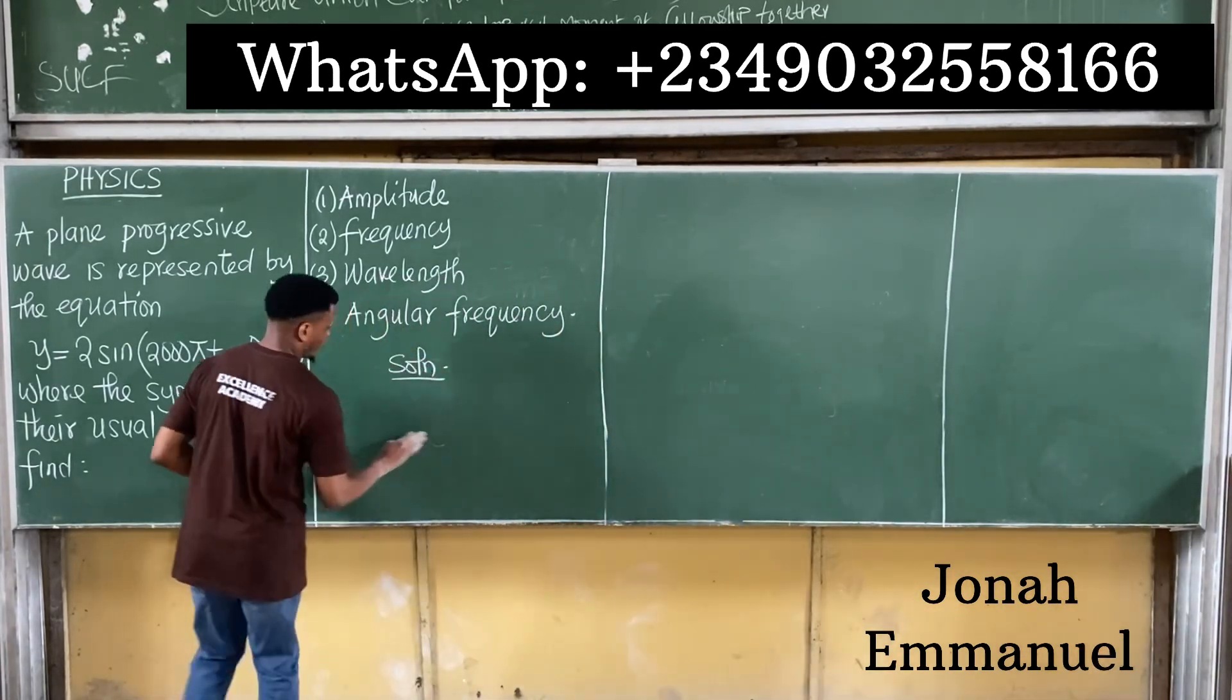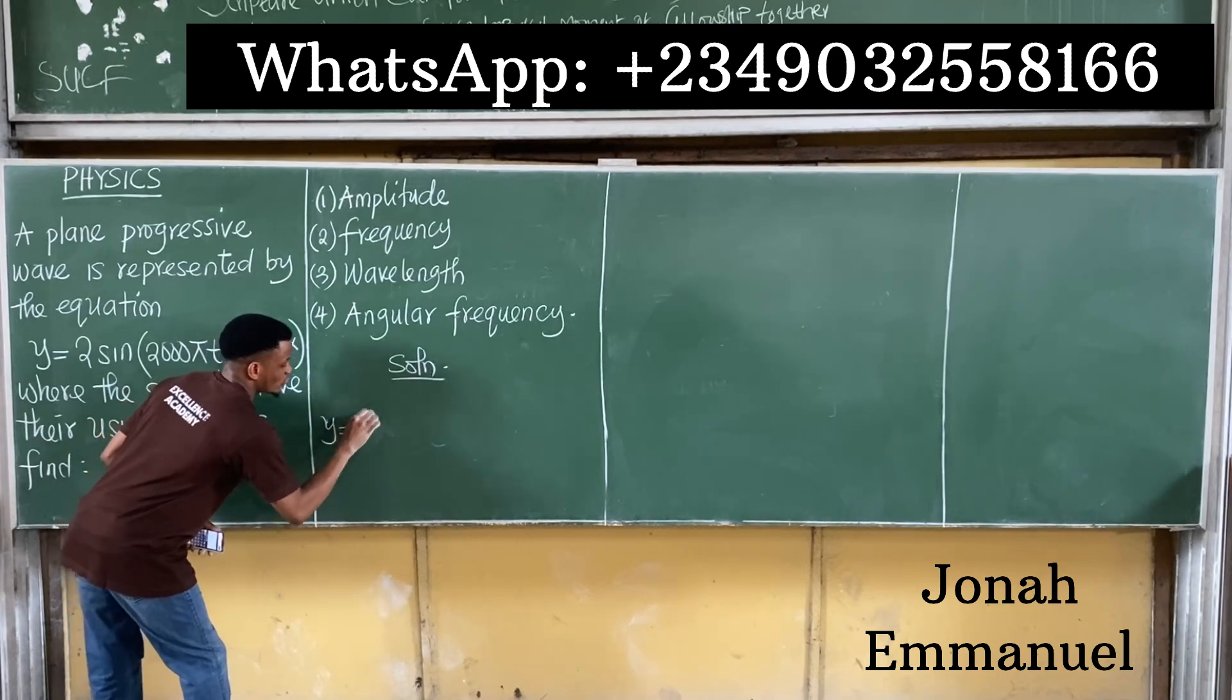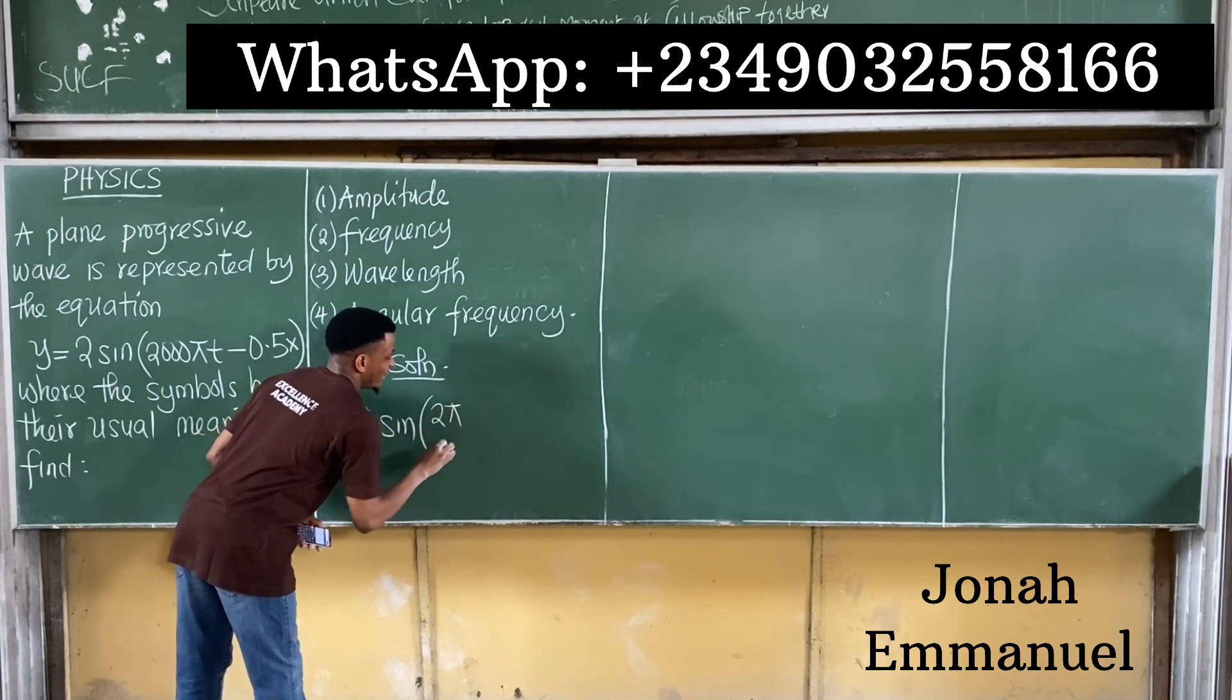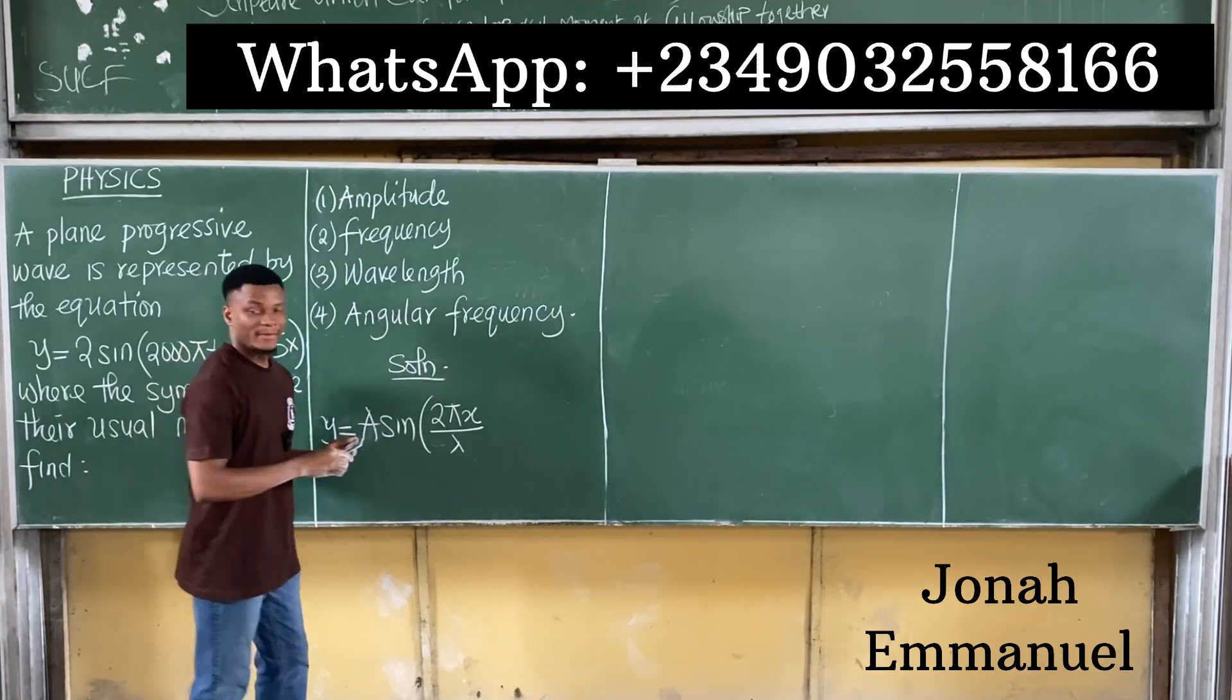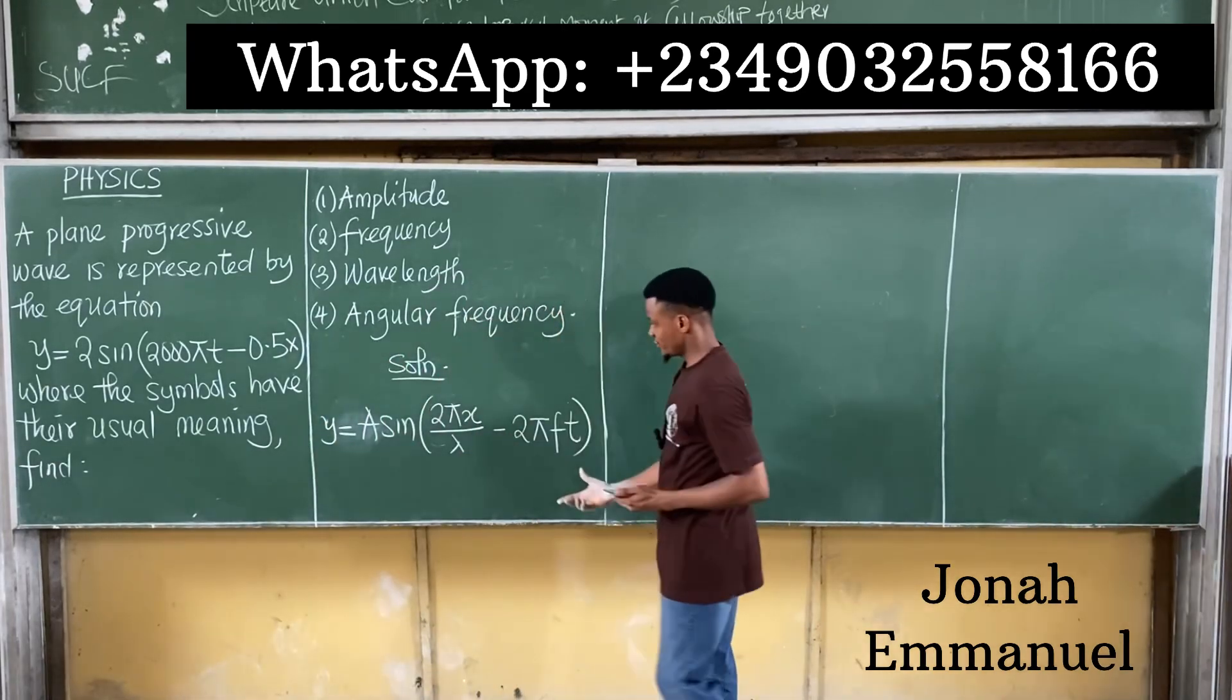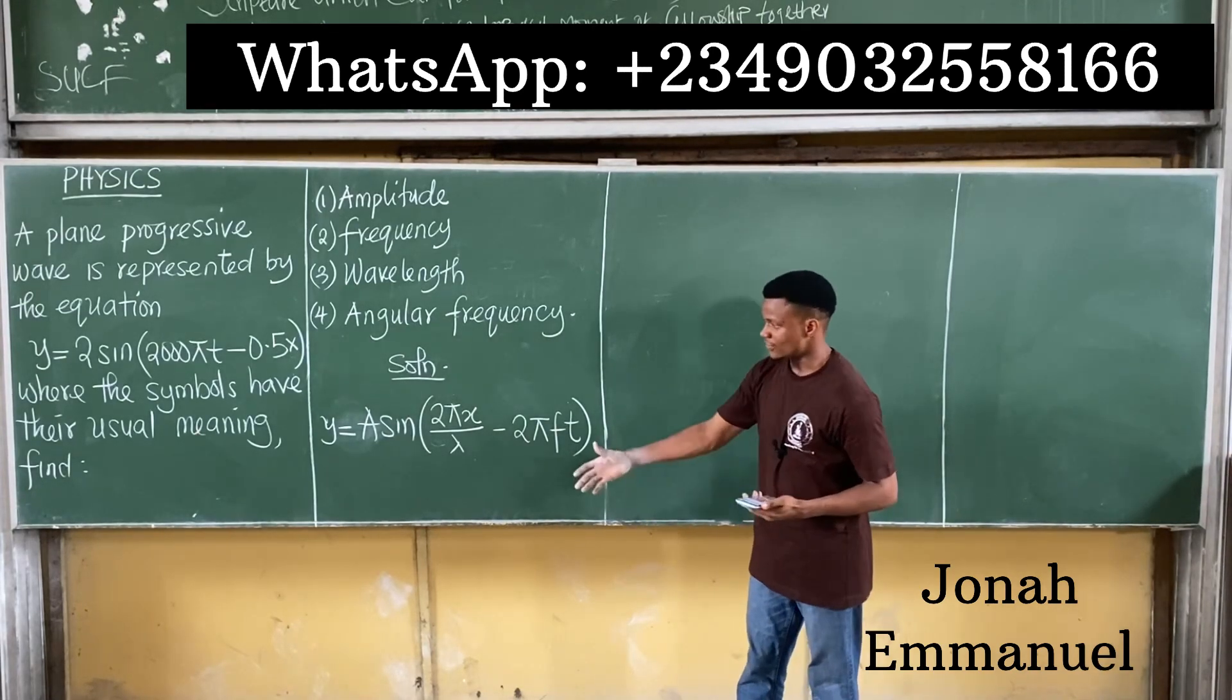But then let's recall the equation for wave. We said that the equation of the wave is given by y = A sin(2πx/λ - 2πft). So this is the general equation of a wave.